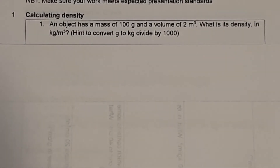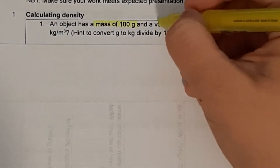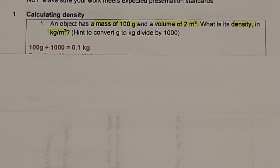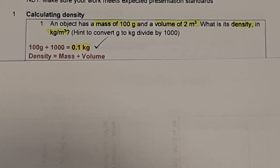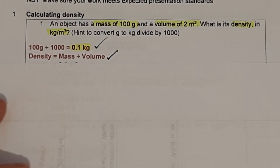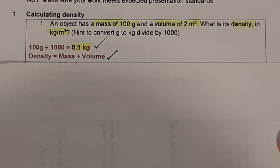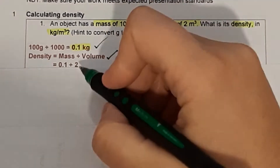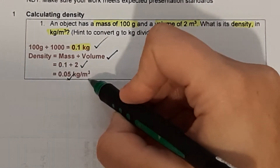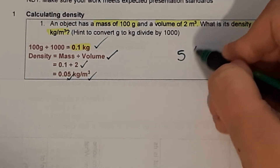Let's go through the density calculations. Question 1: an object has a mass of 100 grams and a volume of 2 metres cubed. First, divide 100 grams by 1,000 to give 0.1 kilograms — that's worth a mark. Density equals mass divided by volume: 0.1 divided by 2 equals 0.05, units kilograms per metres cubed. Give yourself a mark out of 5.